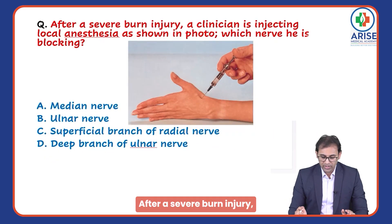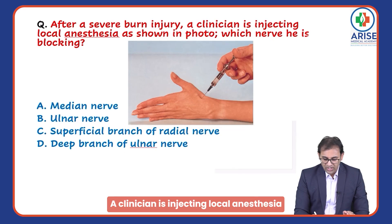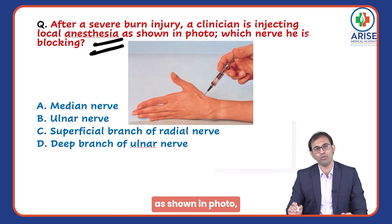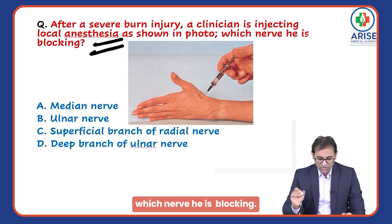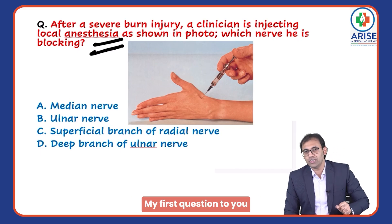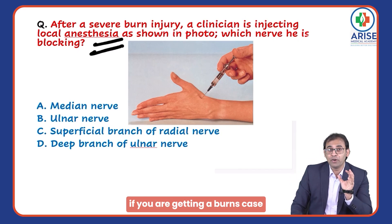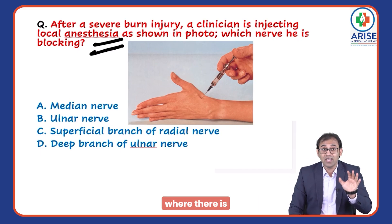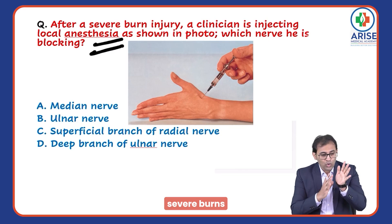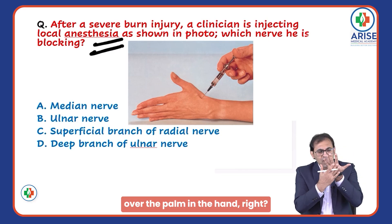After severe burn injury, a clinician is injecting local anesthesia as shown in the photo, blocking the nerve. My first question to you: if you are getting a burns case where there is severe burn over the palm and hand, what is the first line of management?